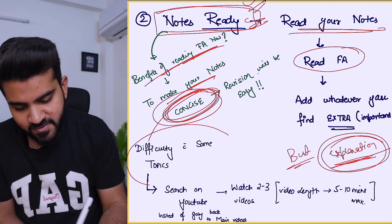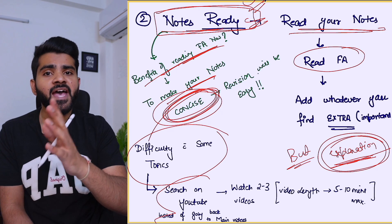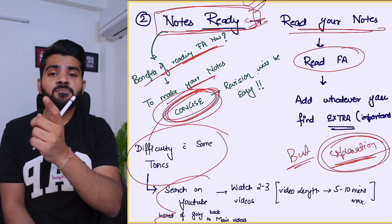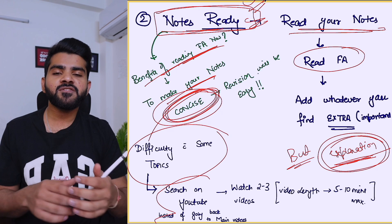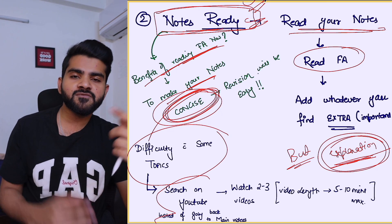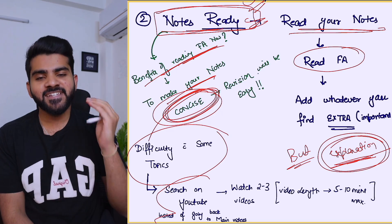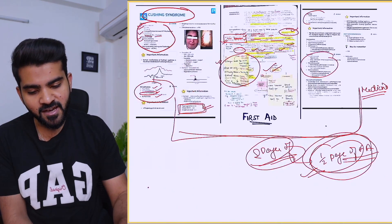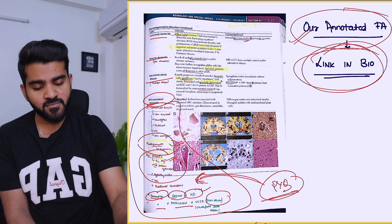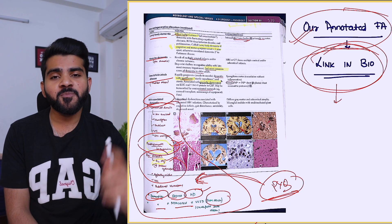If you are having difficulty with some topic while reading notes, instead of going back to the main videos, just search on YouTube for that particular topic and watch two or three short videos, maximum five to ten minutes each — it will be very easy to grasp. So those are the two scenarios: starting fresh, or notes already ready and wanting to make them concise. That's it for this video, hope it helps. If you need the annotated PDF, the link is in the bio and first comment. Thank you so much for watching, see you in the next video!